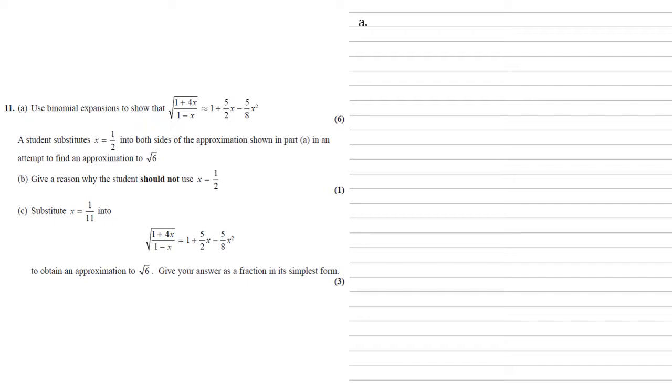So the first thing to do here is to rewrite our root in indices form. So we've got 1 plus 4x to the power of a half times by 1 minus x to the power of negative a half. We can now do a binomial expansion on both of these.